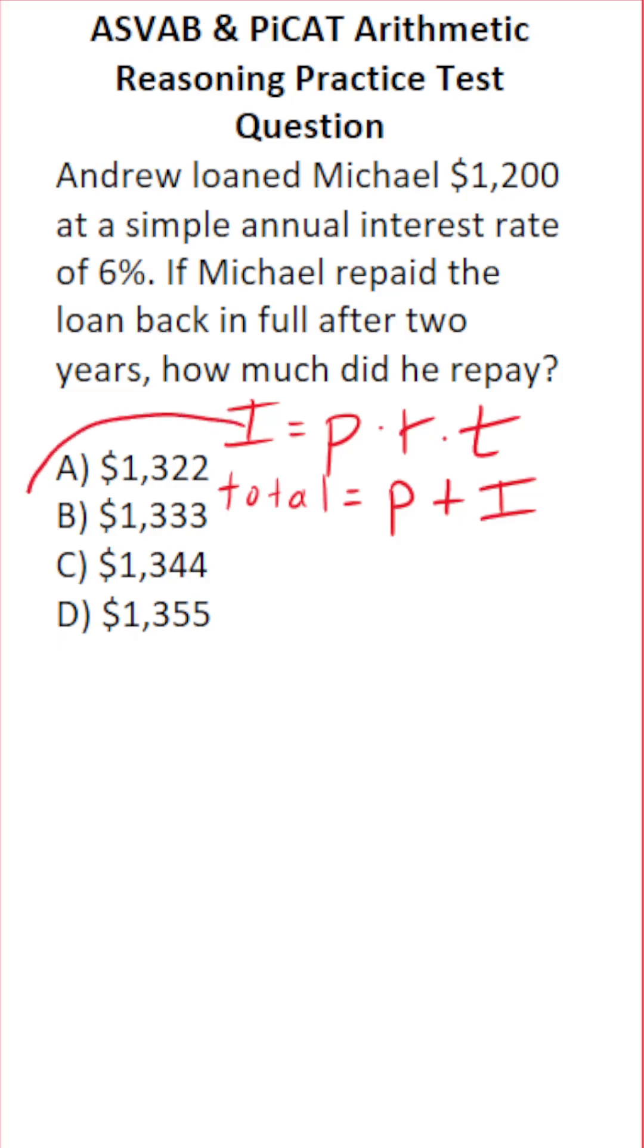Let's start by calculating the interest. I equals principal times rate times time. The principal is the amount he borrowed, $1,200. The interest rate was 6%, so times 0.06—the decimal equivalent of 6%. And how long did it take him to repay? Two years, so T equals 2.